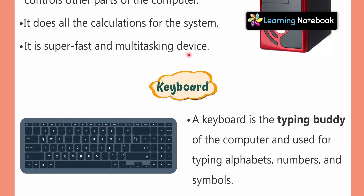The CPU is a super fast and multi-tasking device. Super fast means it works very quickly, and multi-tasking means it does many tasks at the same time — just like we say a mother is multi-tasking because she does many things at once. Similarly, the CPU is also a multi-tasking device that does many tasks simultaneously.